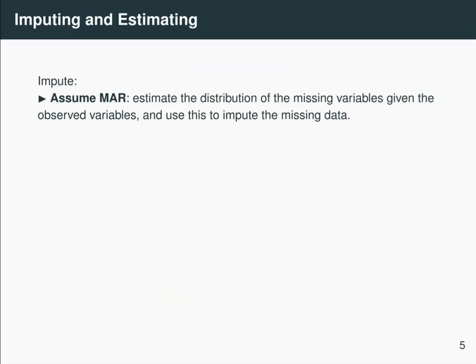Now, how do you impute? Well, first of all, you assume that your data is missing at random given the observed data, and you estimate the distribution of the missing variables given the observed variables, and you use this to impute the missing data. So for example, if you have a missing value for a lifespan, but you have data on that mammal's gestational time, you would use the observed data on the gestational time to get a plausible value for the lifespan.